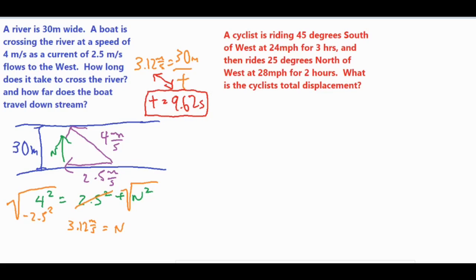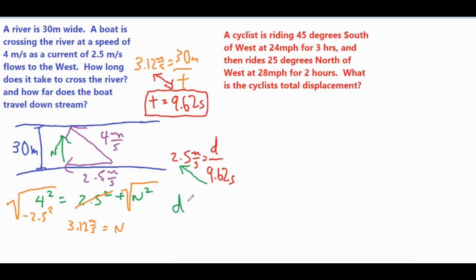Now for the second part: how far does the boat travel downstream? Downstream means toward the west because the current runs west. We use the same formula — speed equals distance over time — with the current speed of 2.5 meters per second equal to the unknown distance over the time of 9.62 seconds we just found. Cross-multiplying gives us a downstream distance of 24.04 meters.